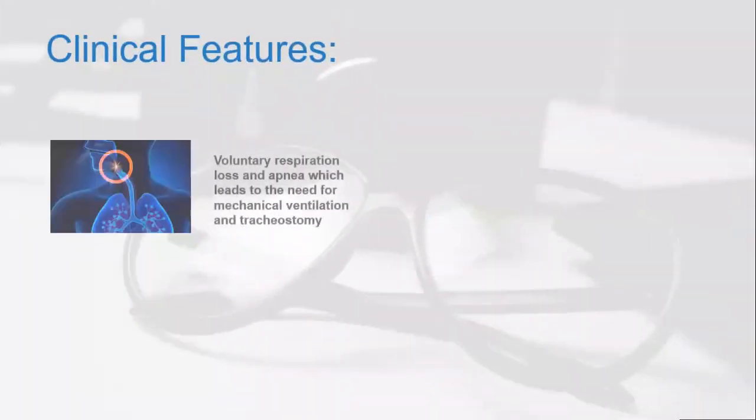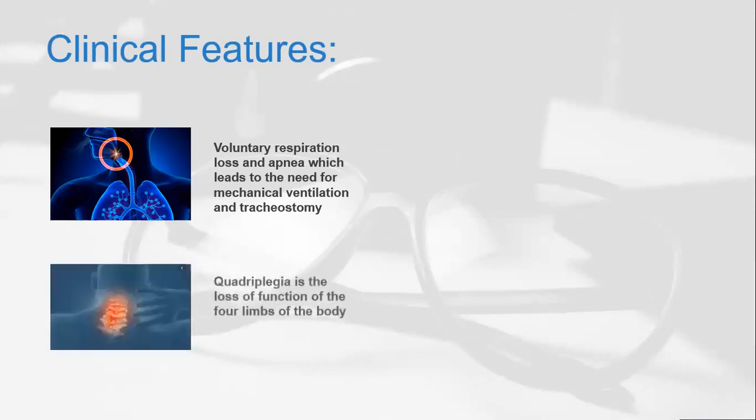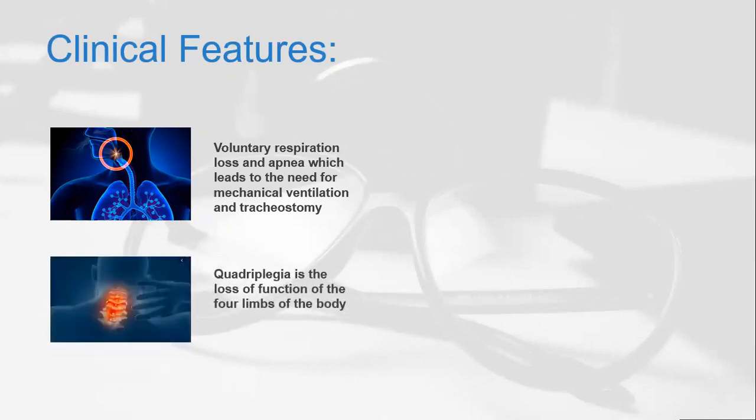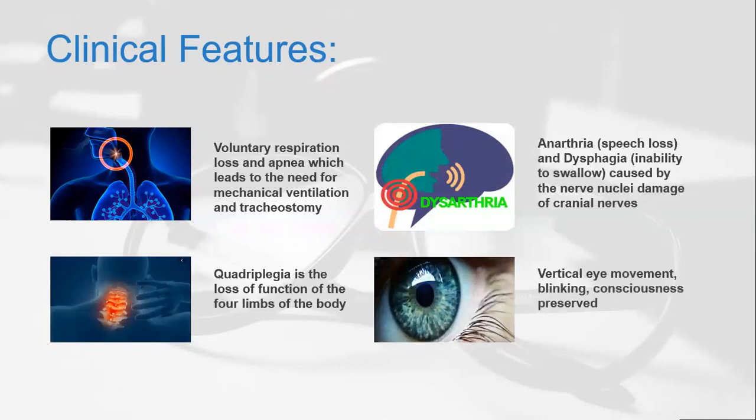Clinical features involved include voluntary respiration loss and apnea which leads to the need for mechanical ventilation and tracheostomy. Quadriplegia is the loss of function of all limbs of the body. Anarthria and dysphagia—anarthria is speech loss and inability to swallow is dysphagia. Dysarthria is mild speech loss but when it transforms into the severe case that is anarthria. These are caused by nerve nuclei damage of the cranial nerves. Vertical eye movement, blinking, and consciousness are preserved.